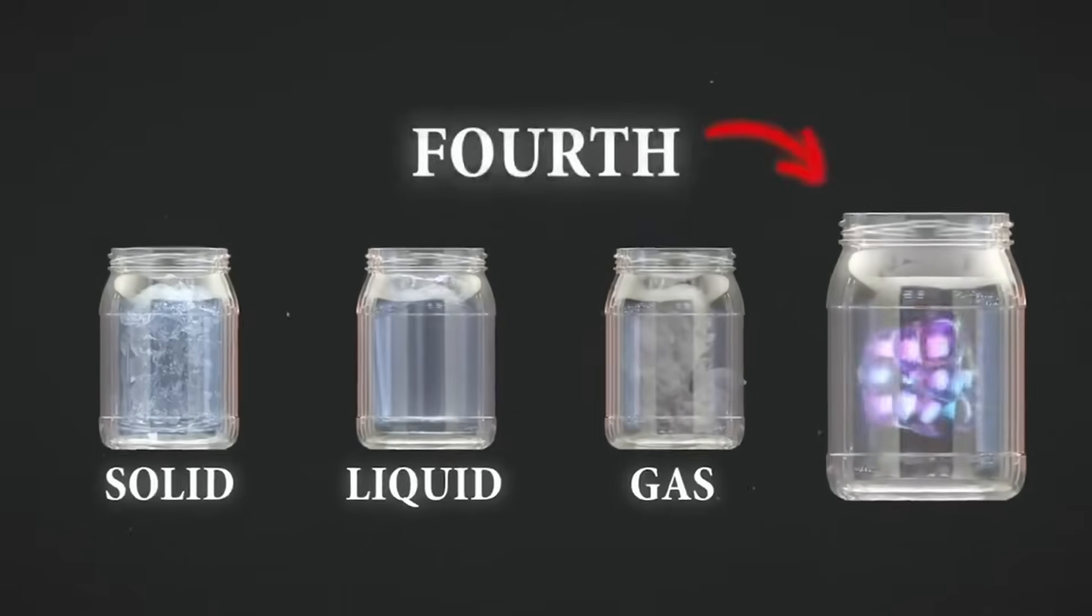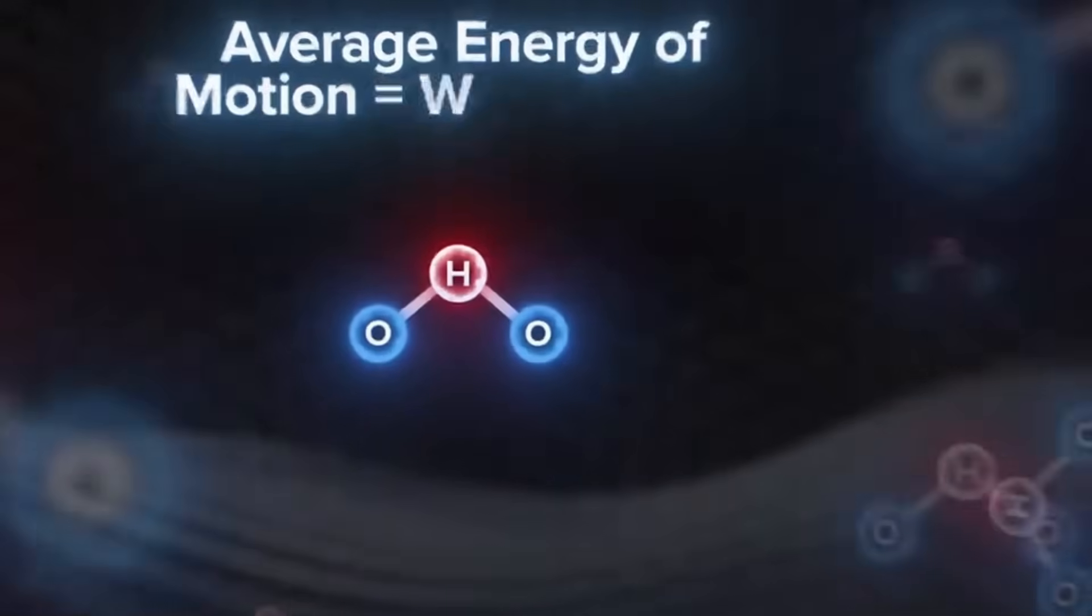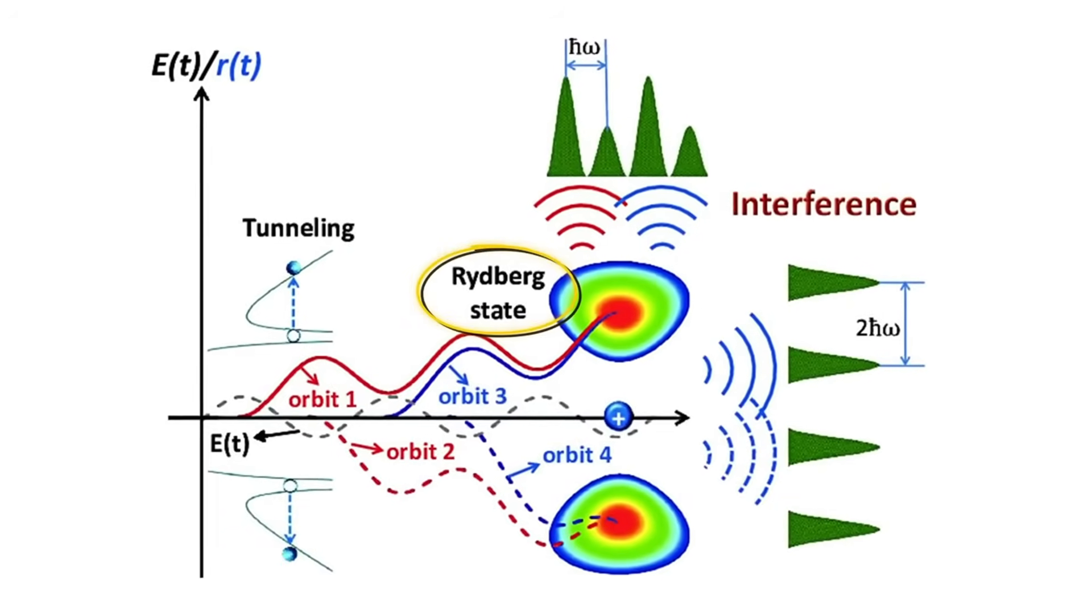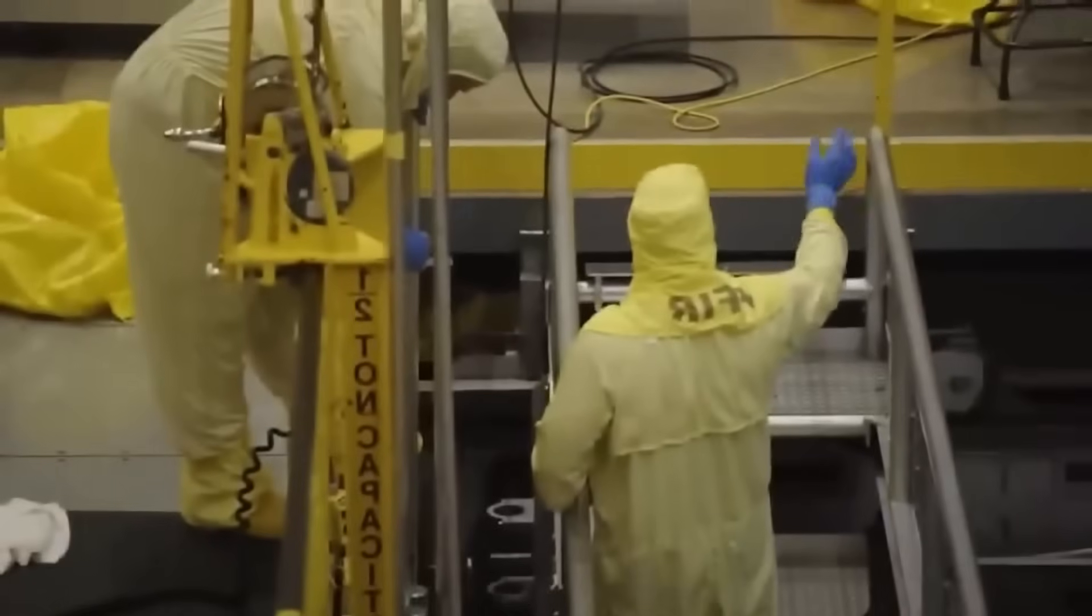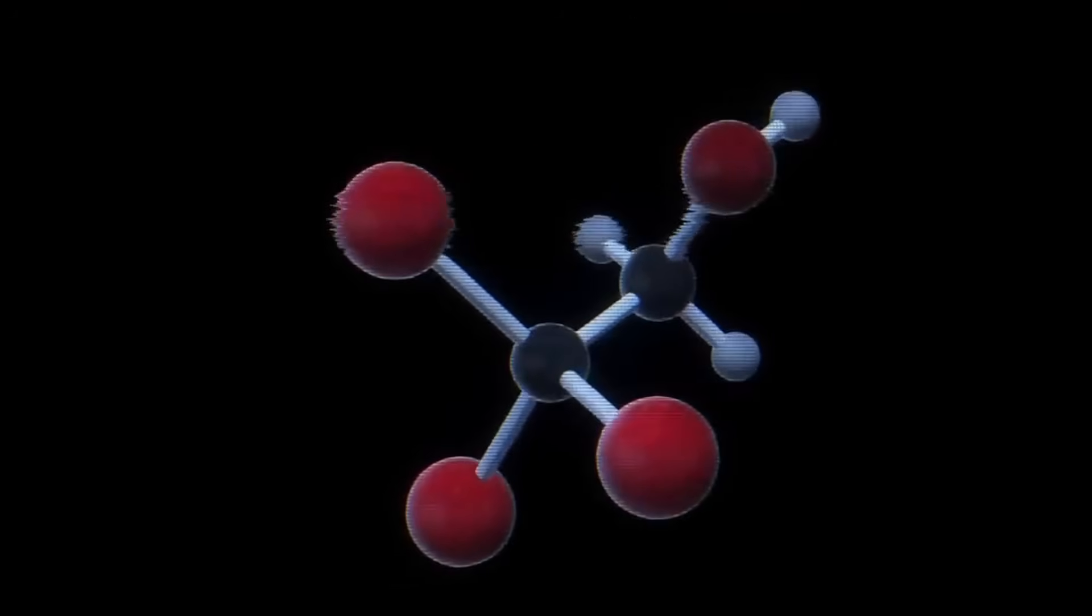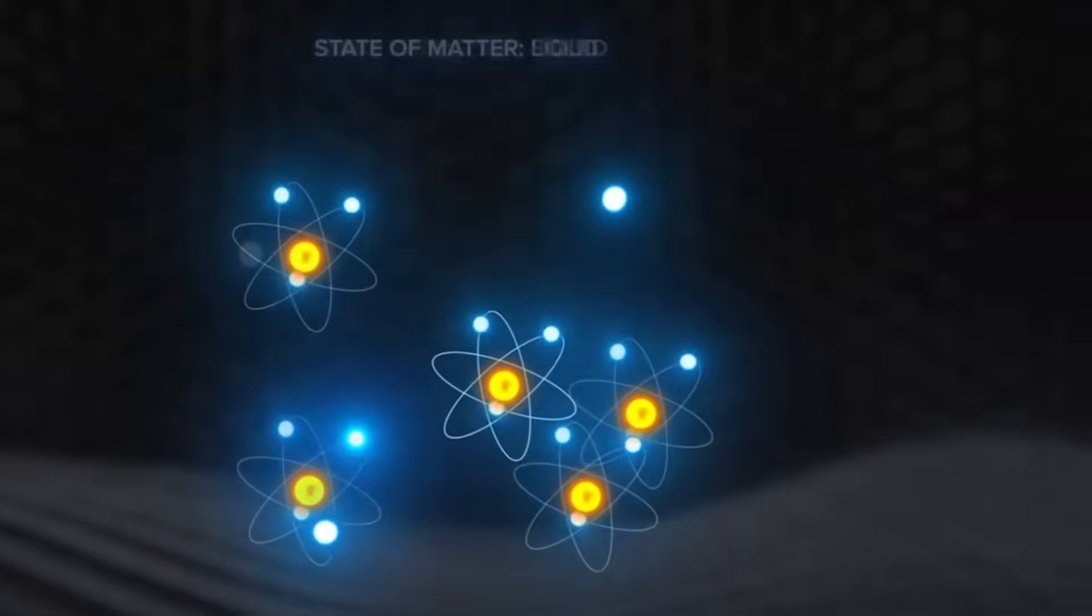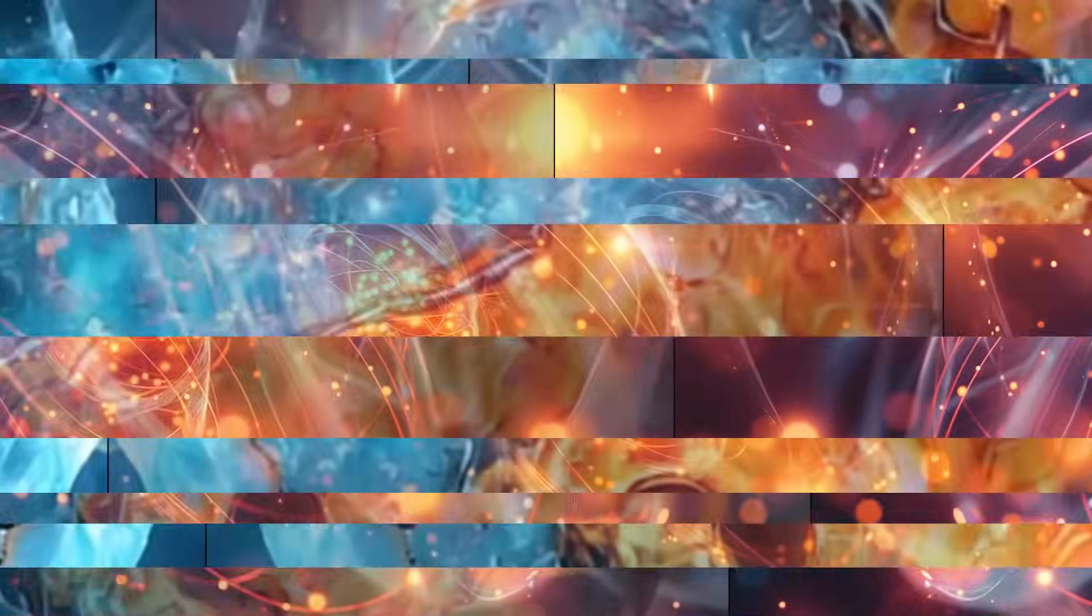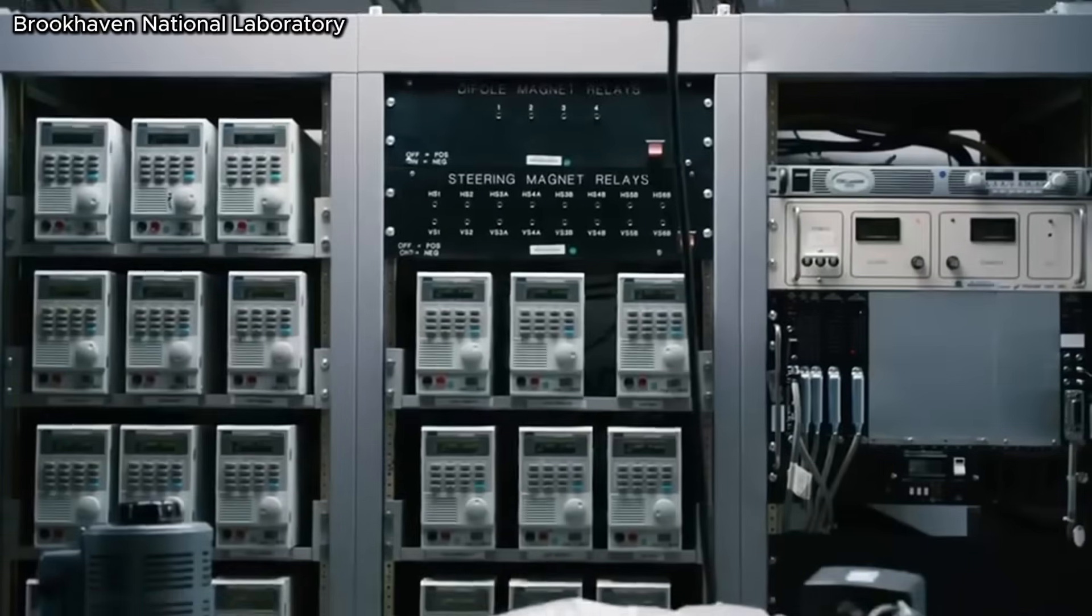This raises a provocative question: are we being too cautious in our classifications? If these phenomena had been discovered in 1905 during the revolutionary period of quantum mechanics, would we already teach them as the sixth, seventh, or eighth states of matter? Or are we so specialized now that we hesitate to redraw the fundamental map? The boundaries between established science and new discovery have always been fuzzy. Even plasma wasn't widely recognized as the fourth state until the mid-20th century, despite being the most common state in the universe.